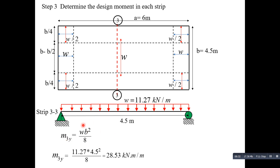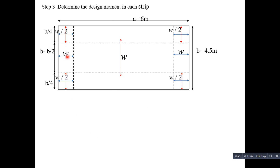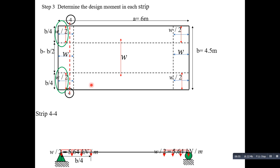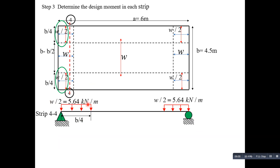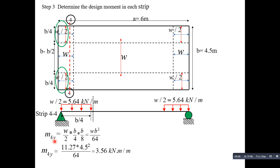For strip 4-4, we consider the vertical direction with w/2 = 5.64 kN/m on the edge strips. Taking a section, M4y = (w/2) × (b/4) × (b/8) = wb²/64. Inserting values: 11.27 × 4.5² / 64 = 3.56 kN·m/m. We have now obtained all the design moments.